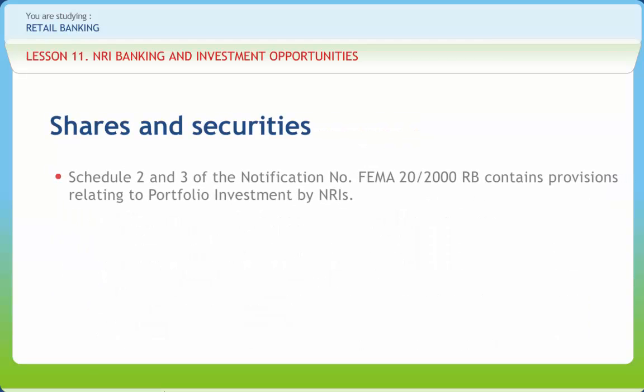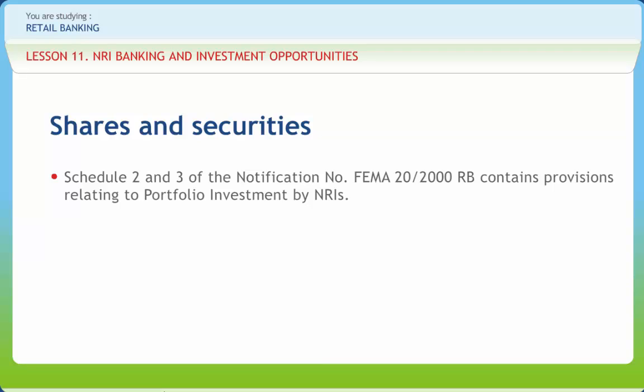Schedule 2 and 3 of notification number FIMA 22000RB contains provisions relating to portfolio investment by NRIs. OCBs are not allowed to make fresh investments in India under the portfolio investment scheme, per notification number FIMA 46 dated 29th November 2001. Further, in September 2003, RBI banned OCBs from investing in any manner in India. In fact, the category of OCB has been abolished. However, they can continue to hold and sell shares purchased before 29th November 2001.